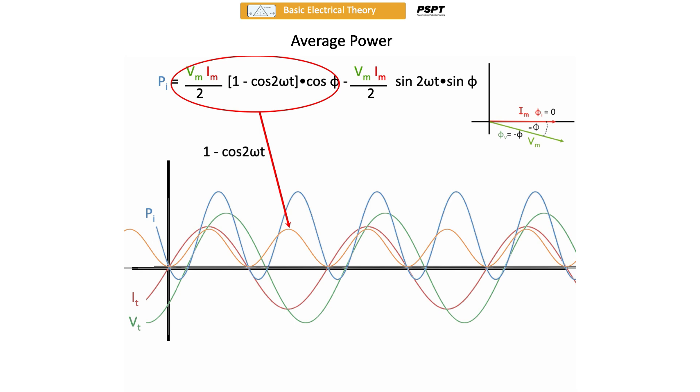The second portion of the equation, Vmim over 2 sin 2 omega t times sin phi, is described with the black curve that I've drawn in the slide here. And the variable portion is the time domain, and I'm just bringing out the actual variable portion of that part of the equation, which is sin 2 omega t. The rest of the stuff around that variable portion of the curve is a constant. The Vmim is a constant. 2, of course, is a constant. And sin phi is a constant. So I'm just bringing out the two variable portions of the equation.